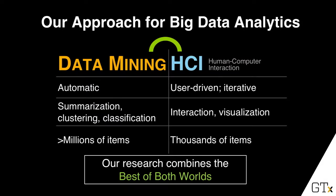In data mining, the focus is on automated techniques — summarization, clustering, classification — and because they're automated, they're a lot more scalable, easily reaching millions or billions of items. HCI, on the other hand, focuses on helping people understand data intuitively through interaction and visualization techniques, using iterative user-centered approaches. Because they're more manual in nature, they're slightly less scalable, maybe thousands of items. Both areas have long been developing methods to analyze data, but traditionally with little communication between them. Our research combines these two areas to take the best of both worlds.